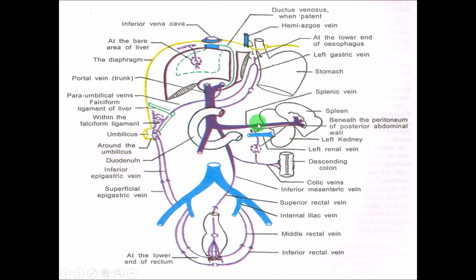This image shows the anastomosis behind the peritoneum, where the left renal vein anastomoses with the splenic vein of the systemic circulation.